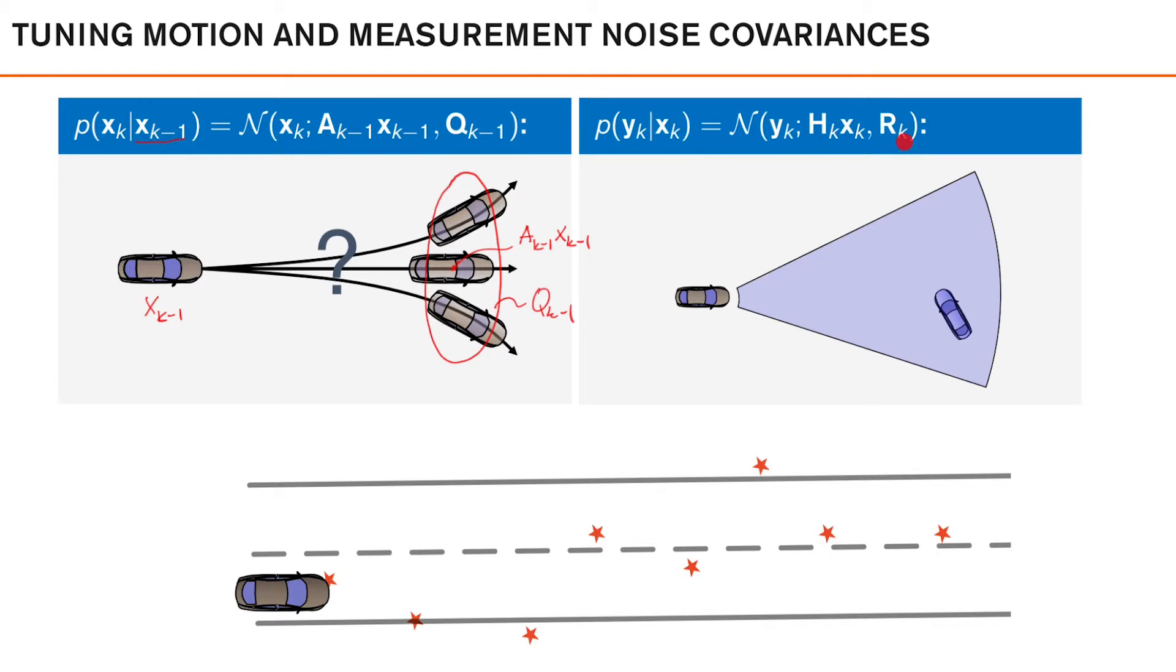This uncertainty should capture both our modeling uncertainty, that comes from making simplifications in this part of the model, and pure measurement noise in the sensor itself.